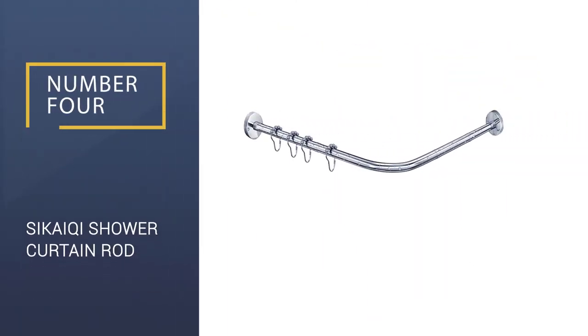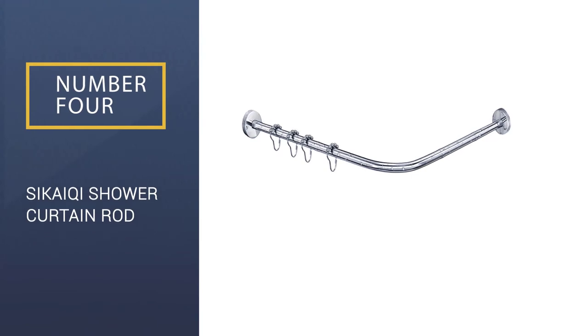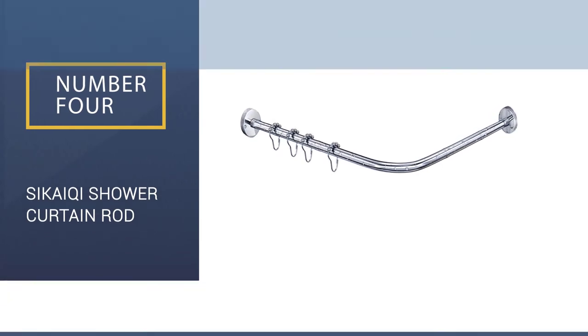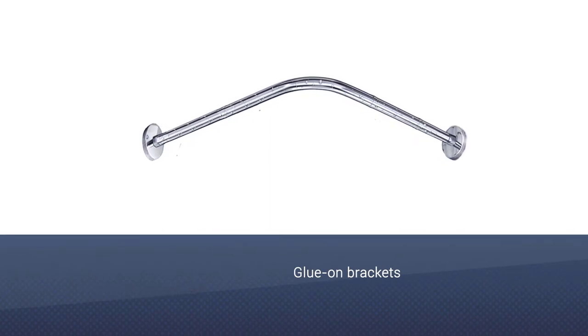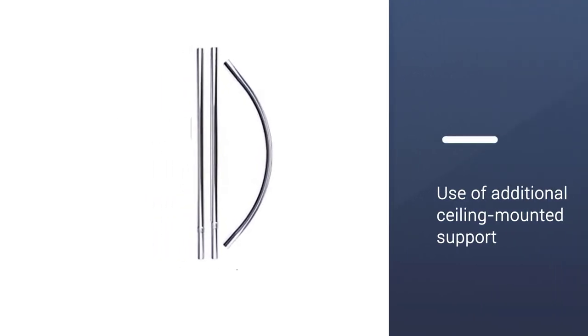Number 4. Sikai Kui Shower Curtain Rod. The Sikai Kui L-shaped shower curtain rod can be fully mounted, which is the sturdier option, or attached with glue-on brackets that support the ends of the rod.